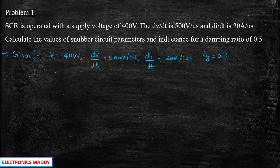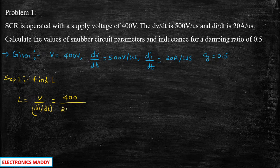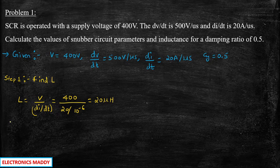Step 1: Find the value of inductor L. L = V / (di/dt). Substituting: L = 400 / (20 × 10⁻⁶). Be very careful — 20 per microsecond means you divide by 10⁻⁶. Solving this, the value of L = 20 microhenry. I would suggest you to parallelly make a note of it.